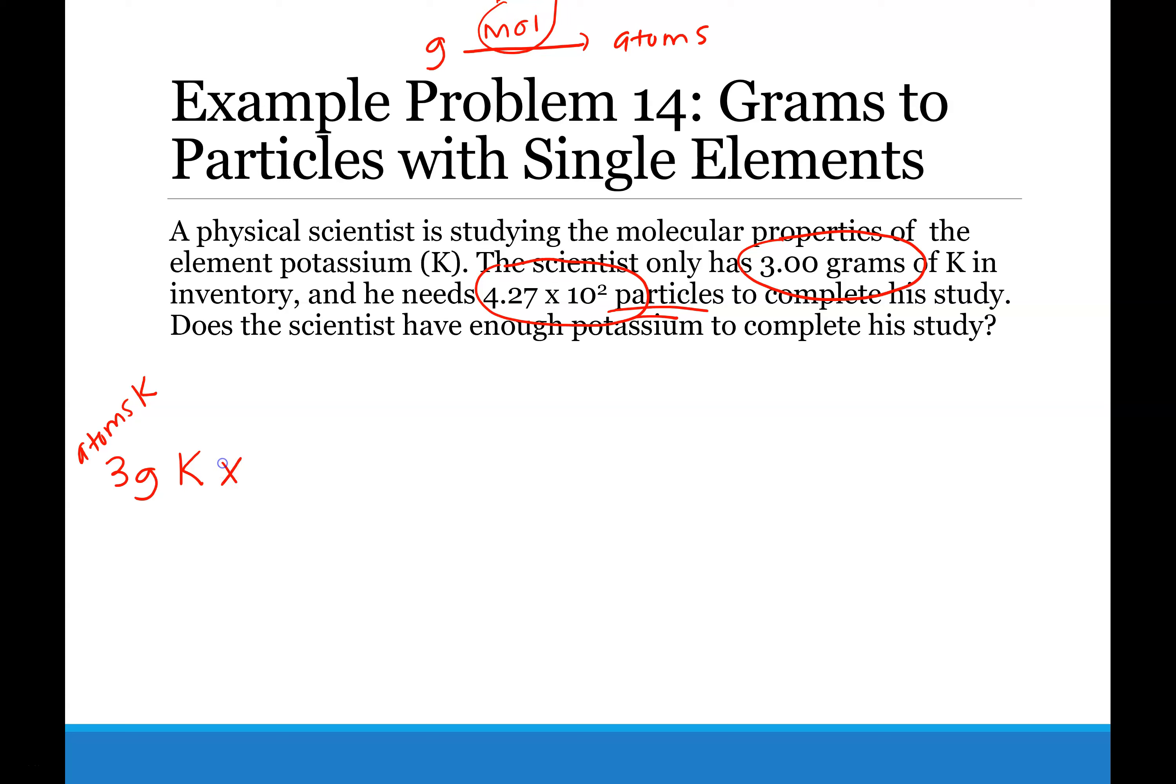So we need to draw our multiplication symbol, draw our division bar, bring grams of potassium down, and go to moles of potassium first. Then we can go from moles of potassium to atoms of potassium to determine if the scientist can complete the study.